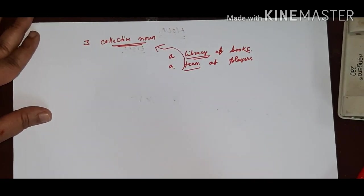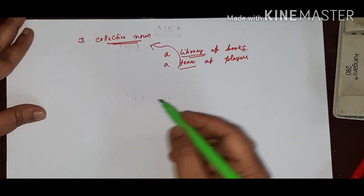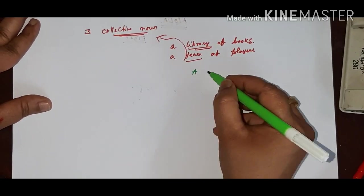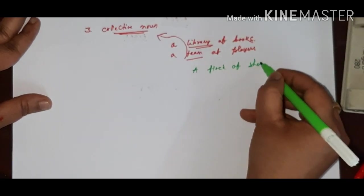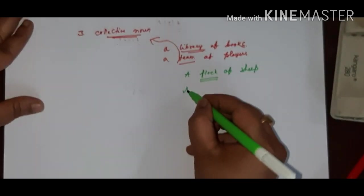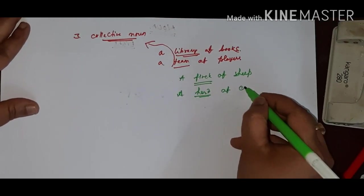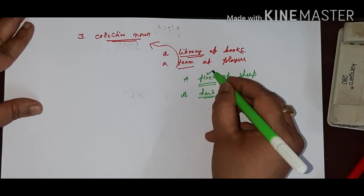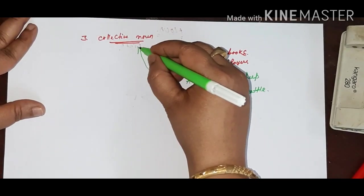Remember children, some collective nouns are used to name a group of animals and birds. For example, a flock of sheep, and a herd of cattle. Here, this flock and herd, these both are known as the collective noun.